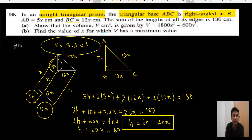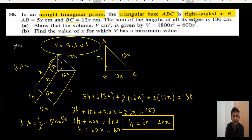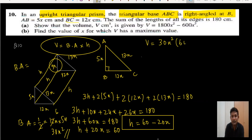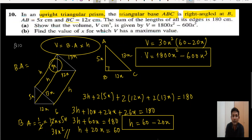The volume of the prism is base area times height. The triangular base area is half times 12x times 5x equals 30x squared. So Volume equals 30x squared times (60 minus 20x). Expanding: Volume equals 1800x squared minus 600x cubed. We have proved the required volume expression.